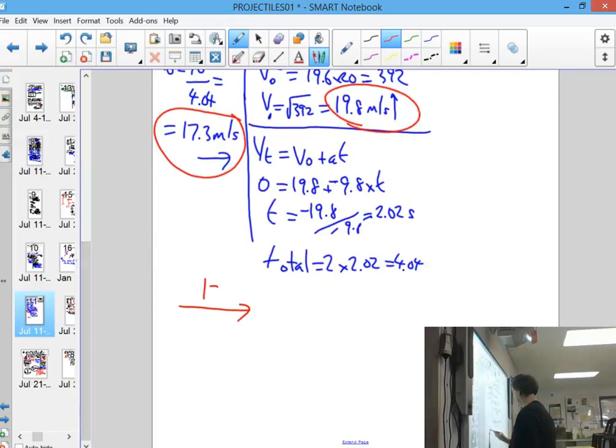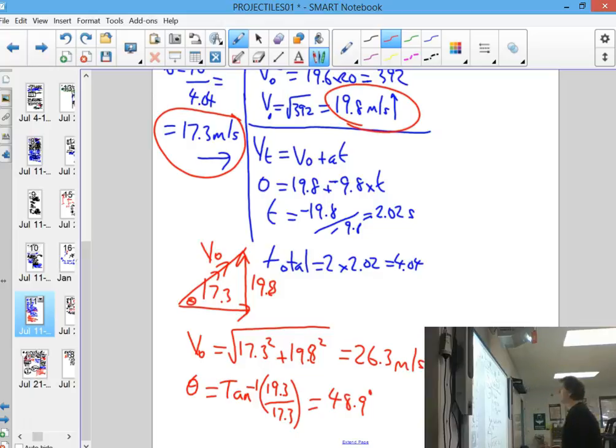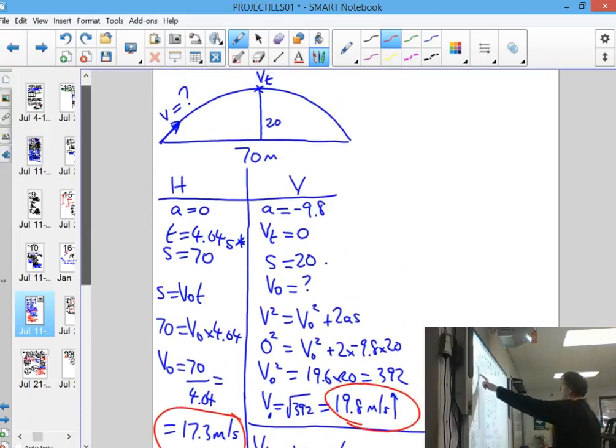So you're going to get 17.3 and 19.8. And obviously that's the total there. It's the velocity at the start. So you would go and use your Pythagorean theorem. 17.3 squared plus 19.8 squared. And theta would be tan to the minus 1 of opposite over adjacent. So that's 19.8 over 17.3. So that's 26.3 and 48.9 degrees. So that's a very hard one. It's going to take a lot of time just to do that one question.